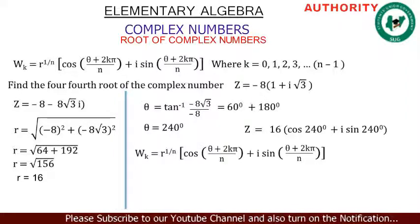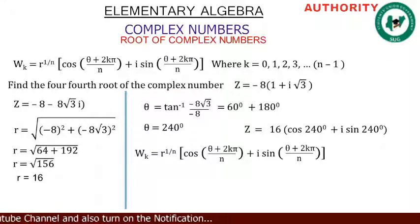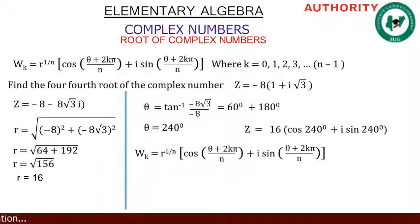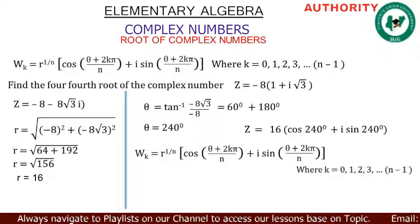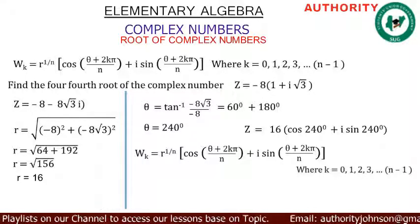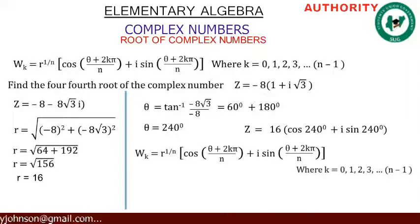Using our formula, w_k = r^(1/n) [ cos((θ + 2kπ)/n) + i sin((θ + 2kπ)/n) ]. We have r = 16 and θ = 240°. Since we are finding the fourth root, n = 4. So k goes from 0 to n - 1 = 3, meaning k = 0, 1, 2, 3.